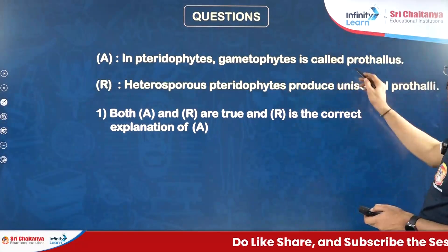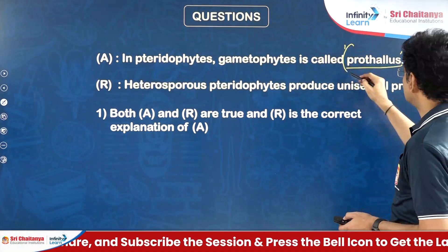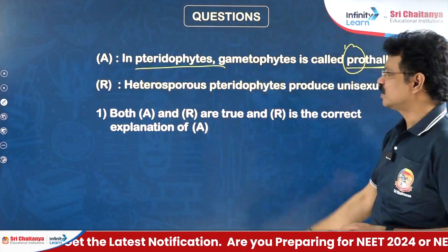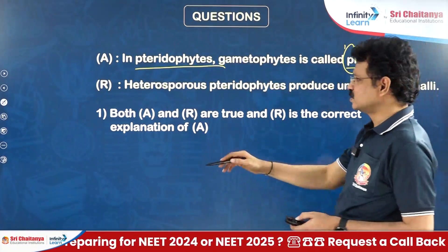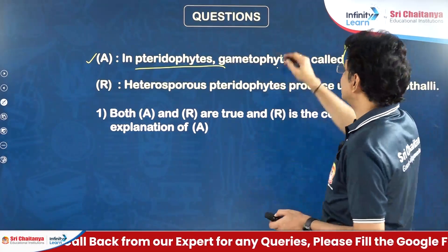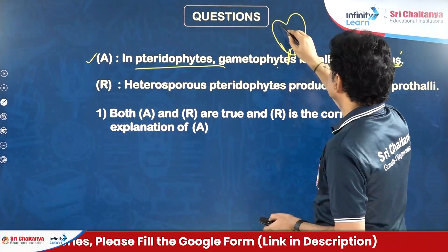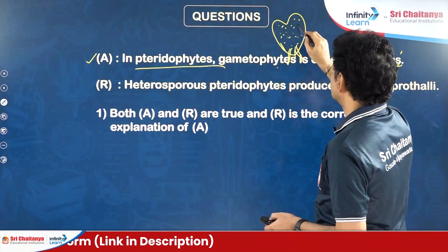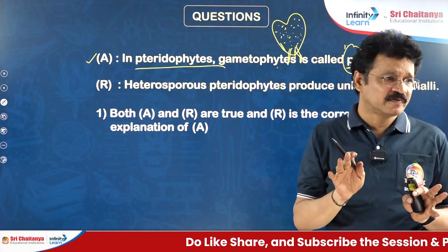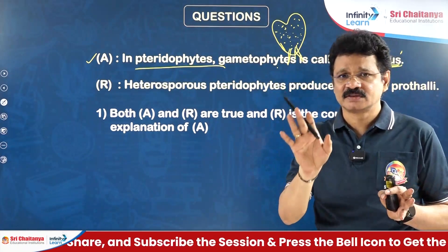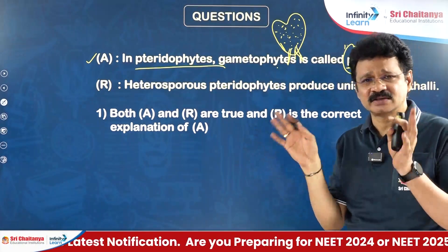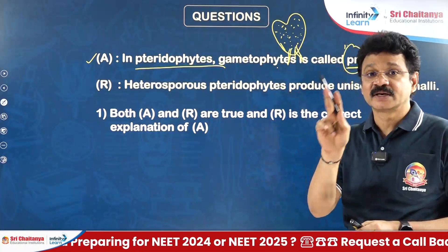In pteridophytes, the gametophyte is called prothallus — pro meaning first-formed, thallus-like structure in the life cycle. It is independent but not dominant, heart-shaped, photosynthetic. Vascular tissues are absent in prothallus. This is an important concept: in all tracheophytes, vascular tissues are confined to the sporophyte body only, not to the gametophyte body. Even in vascular plants like gymnosperms, angiosperms, and pteridophytes, vascular tissues are absent in the gametophytic portion.